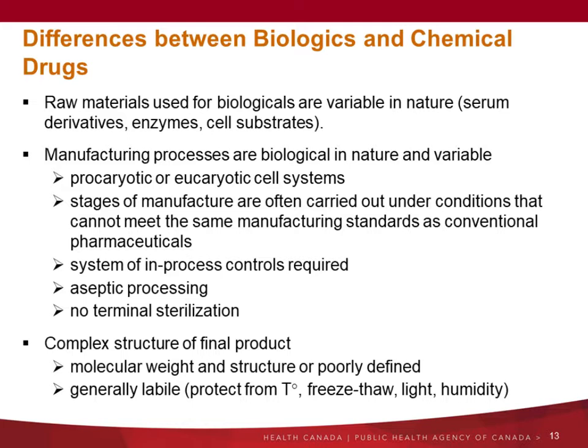What makes biologics more variable? There are different reasons. The raw materials used to manufacture biologics are variable in nature — for example, serum varies from batch to batch. The manufacturing processes are biological in nature and variable — we talk about cell culture processes. You cannot terminally sterilize the product as it would kill the proteins, so you need aseptic processing. The complex structure of the final product means molecular weight and structure are poorly defined, and biologics are sensitive to temperature and light.